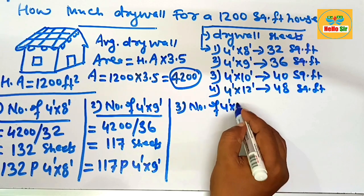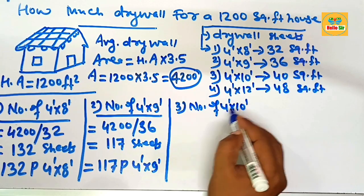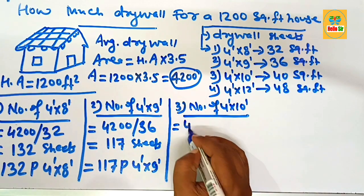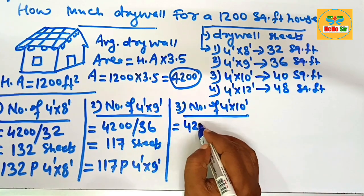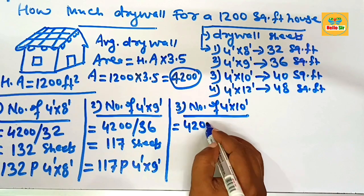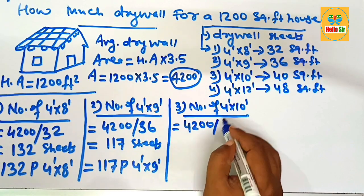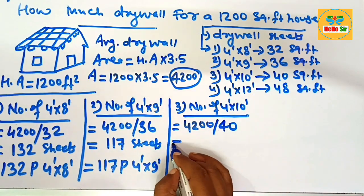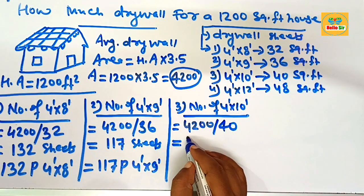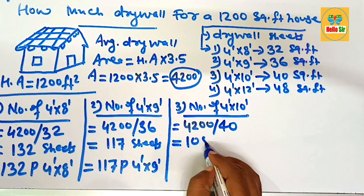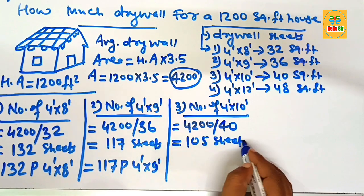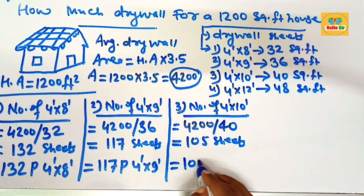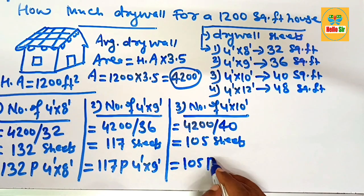Now calculate the number of 4 foot by 10 foot drywall sheets. Using a similar method, divide 4200 by the one piece area of 40. After division, this comes to about 105 sheets. You need approximately 105 pieces of 4 by 10 foot drywall sheet.